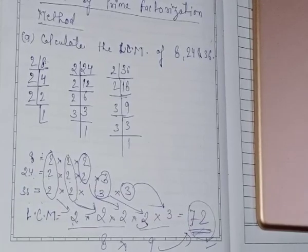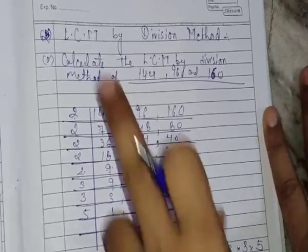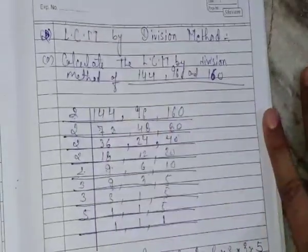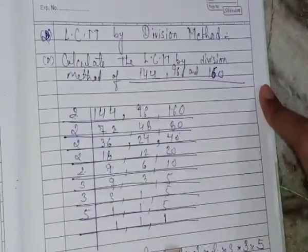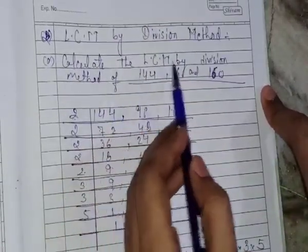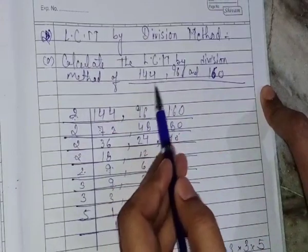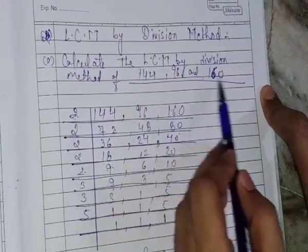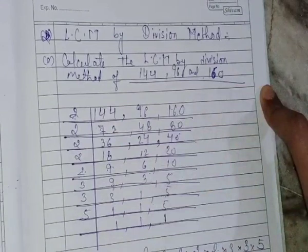Now I will let you know what the second method is. The second method is LCM by division method. For example, calculate the LCM by division method of 144, 96 and 160.